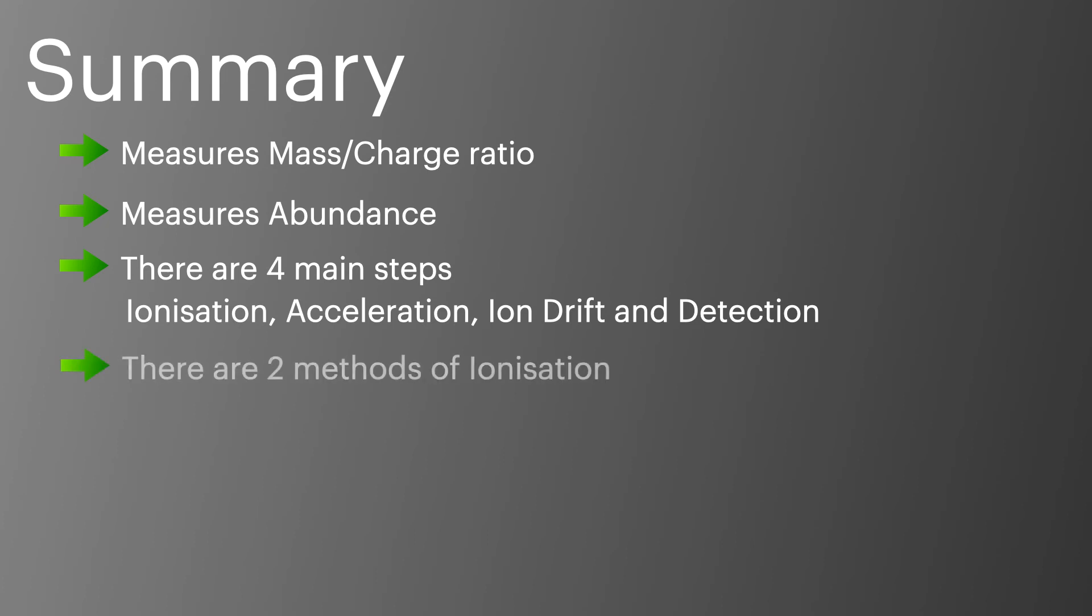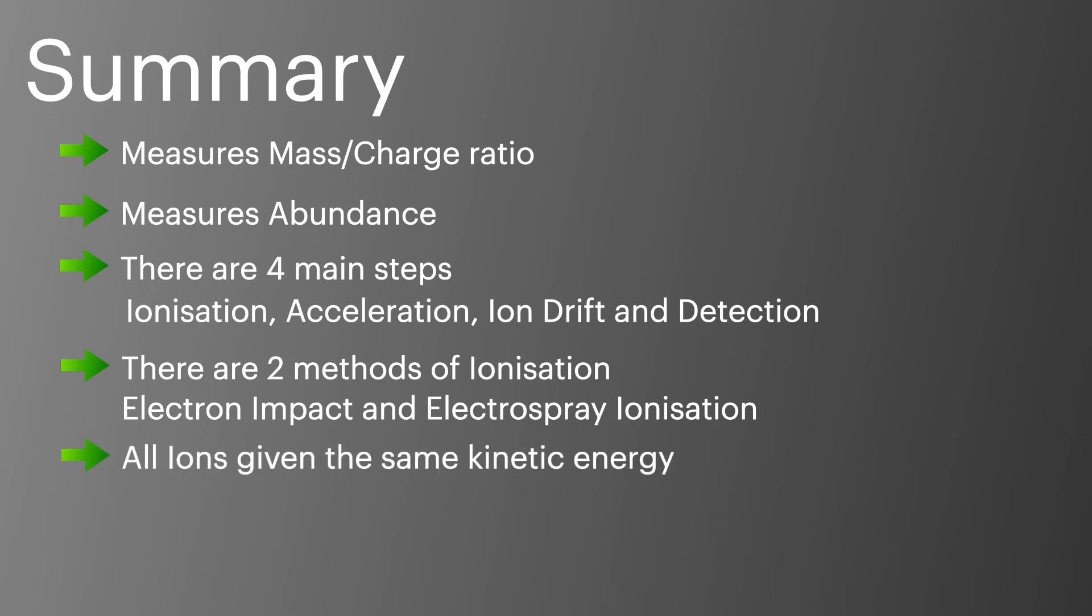There are two methods of ionization. Electron impact, where electrons are fired at the sample to knock off electrons, and electrospray ionization, where a proton is added to the molecule. All ions are given the same kinetic energy, which means the heavier ions will take longer to travel through the flight tube and reach the detector, compared to the lighter ions.